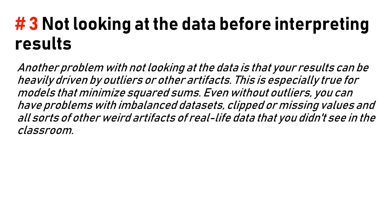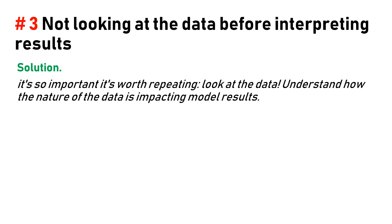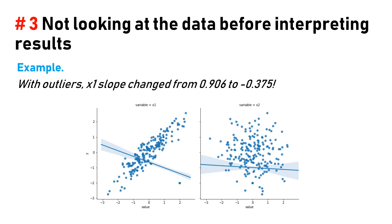Another problem with not looking at the data is that your results can be heavily driven by outliers or other artifacts. This is especially true for models that minimize squared sums. Even without outliers, you can have problems with imbalanced datasets, clipped or missing values, and all sorts of artifacts from real-life data that you didn't see in the classroom. Solution: look at the data and understand how the nature of the data impacts model results. Example: with outliers, the x1 slope changed from 0.9 to 0.375.